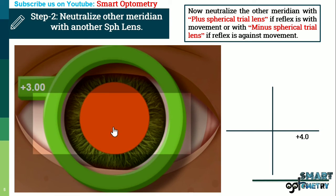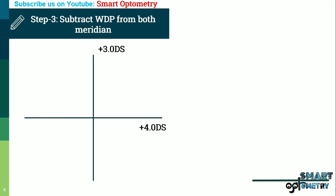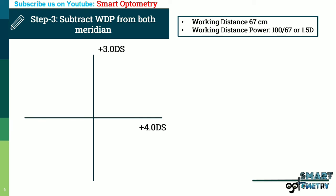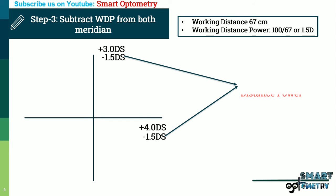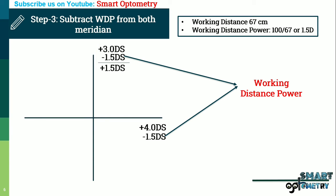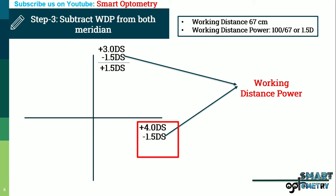We write this power into the optical cross — 180-degree axis gives plus 3, written 90 degrees apart. Step 3: subtract the working distance power from both meridians. We performed retinoscopy from 67 centimeters, equivalent to plus 1.5 diopters, so we subtract plus 1.5 diopters from both meridians. The vertical meridian becomes plus 3 minus 1.5 = plus 1.5 diopters, and the horizontal meridian becomes plus 4 minus 1.5 = plus 2.5 diopters.